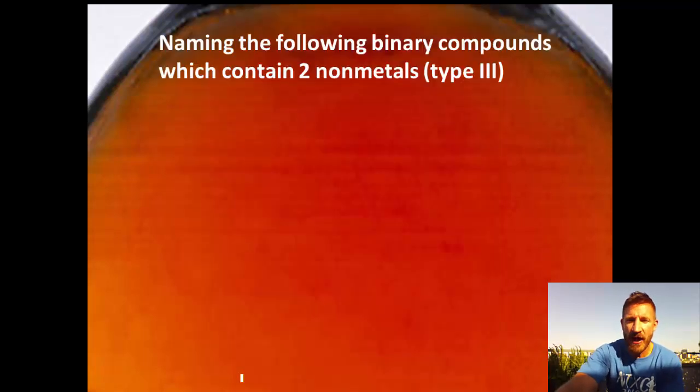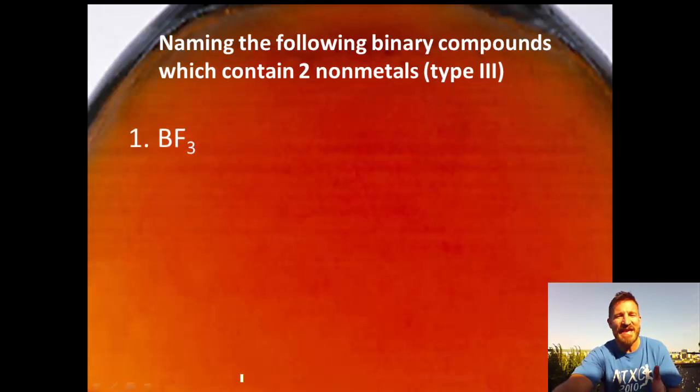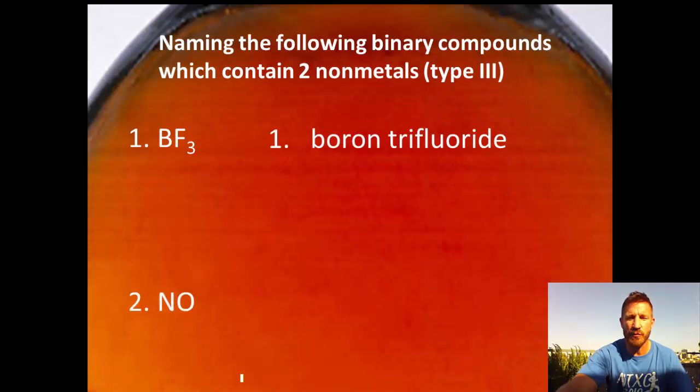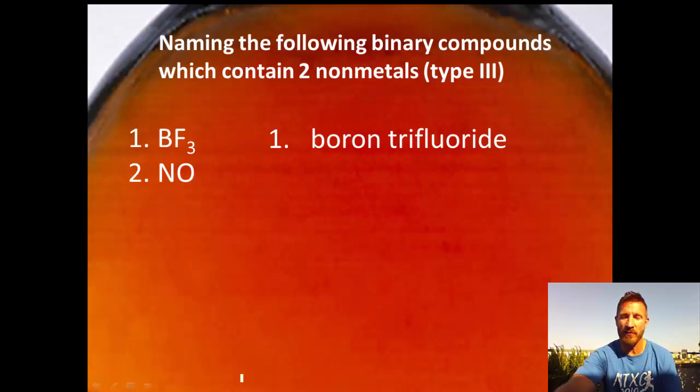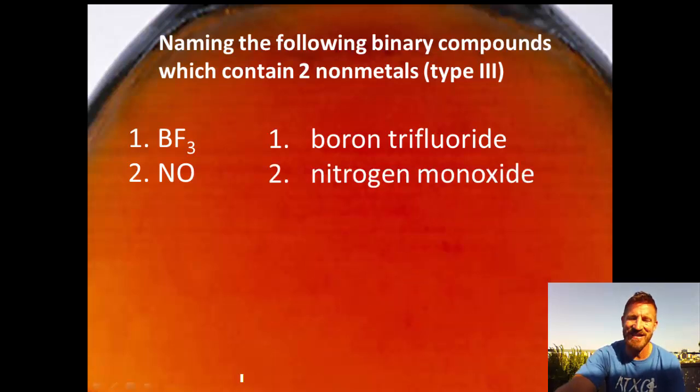Name the following binary compounds which contain two non-metals, type 3 compounds. The first one, BF3: there's only one boron, so we don't use a prefix, so we say this one should be boron trifluoride. Next one, NO: notice we don't use one if it's a first element, we use one if it's a second element though. So we call this nitrogen monoxide.